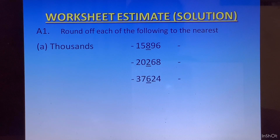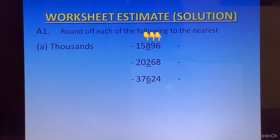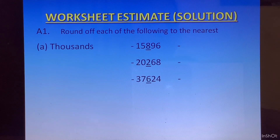Let us look at the first number: 15896. 8 is at the hundreds place. 8 is greater than 5, so we will add 1 to 5 at the thousands place, and all the numbers on the right of the thousands place will be converted to 0. That is 8, 9, and 6 will become 0. So the answer we get is 16000.